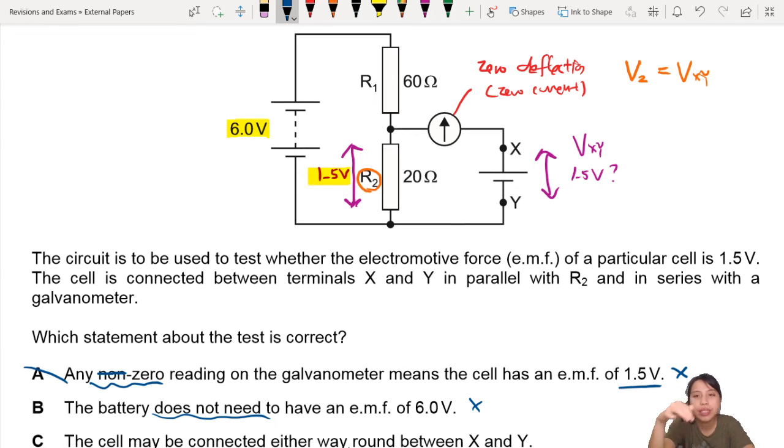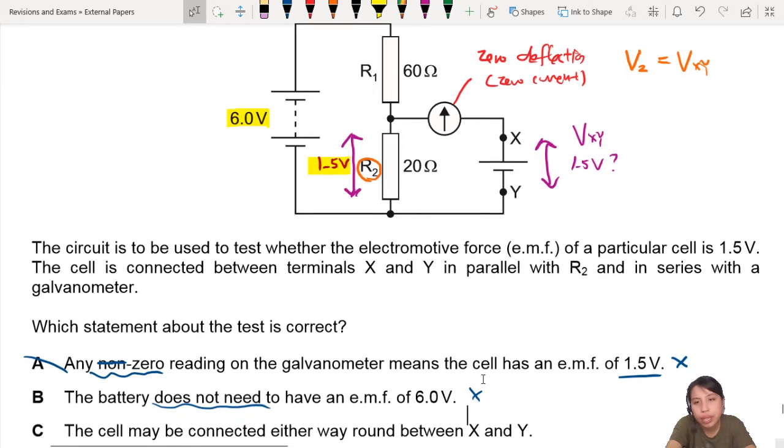C: The cell may be connected either way around between X and Y. It makes a difference. You can't just simply switch the battery cells on this side positive-negative. You can't do that either way around because you are changing the potential structure of that whole part - positive-negative, high potential-low potential. You can't just simply change the cell. No.